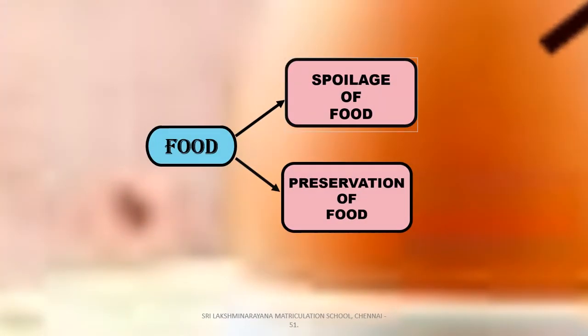We have to preserve the food we eat. If we do not preserve the food properly, it gets spoiled. We get diseases through spoiled food. Let us discuss about the spoilage of food and the preservation of food further.